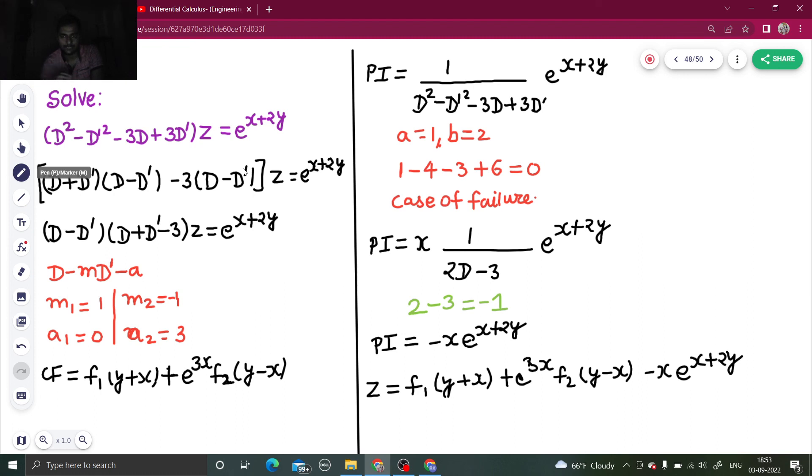Coming to particular integral in case of e power ax plus by replace d by a and d dash by b. If the denominator comes 0, multiply by 1x and differentiate the denominator with respect to capital D taking d dash as constant. Repeat the same until you get a non-zero in denominator. In the step in which you get non-zero that is the particular integral.